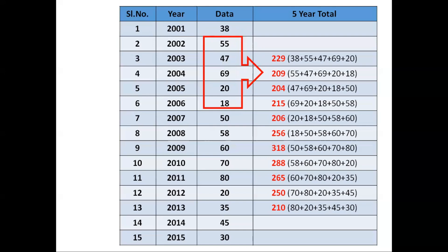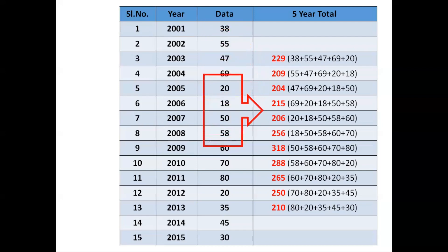For the next step, you drop the first two entries and start from the third one, again taking a five-year total. That means adding from 2003 to 2007, giving a total of 204. You keep doing this as long as you can get five years of data. When you can no longer get five entries, you stop adding.